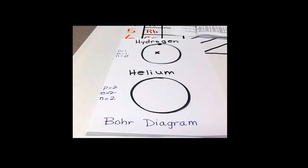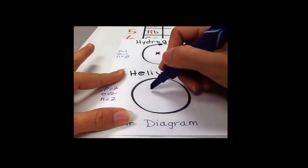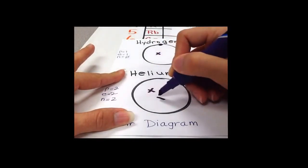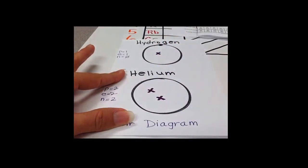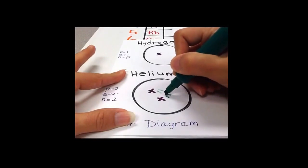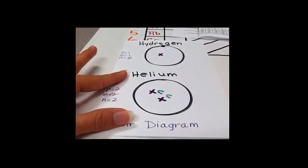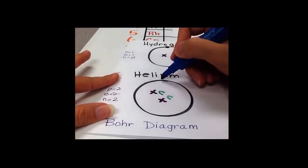Let's look at helium. Helium has two protons, two electrons, and two neutrons. So we would have two protons, two neutrons, and two electrons.